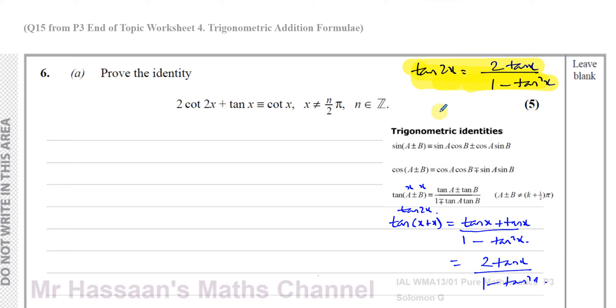I know cot 2x is the reciprocal of tan 2x. So if tan 2x is 2 tan x over 1 minus tan squared x, that means cot 2x is going to be the reciprocal of this. So cot 2x would be 1 minus tan squared x over 2 tan x. So what I'm going to do is I'll replace the cot 2x with 1 minus tan squared x over 2 tan x. And I've got plus tan x, and I have to show, when I simplify this, I get cot x.